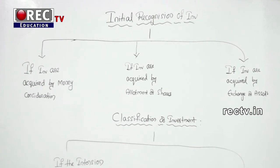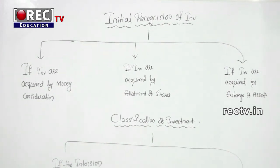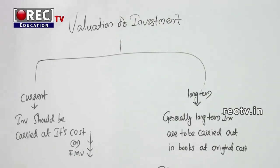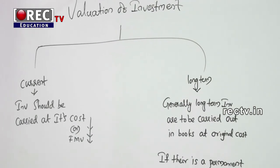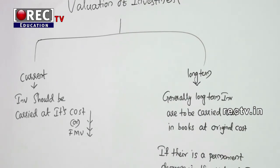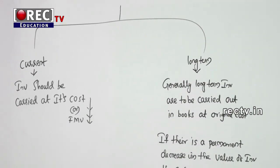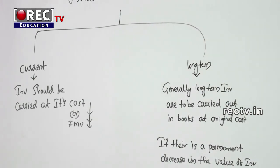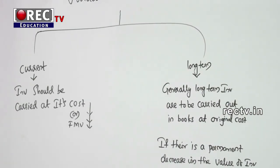Valuation of investment is divided into current and long-term. For current investments, investment should be carried at cost or fair market value, whichever is lower. Any upward or downward movement in the book value of current investments should be taken to the Profit and Loss account.